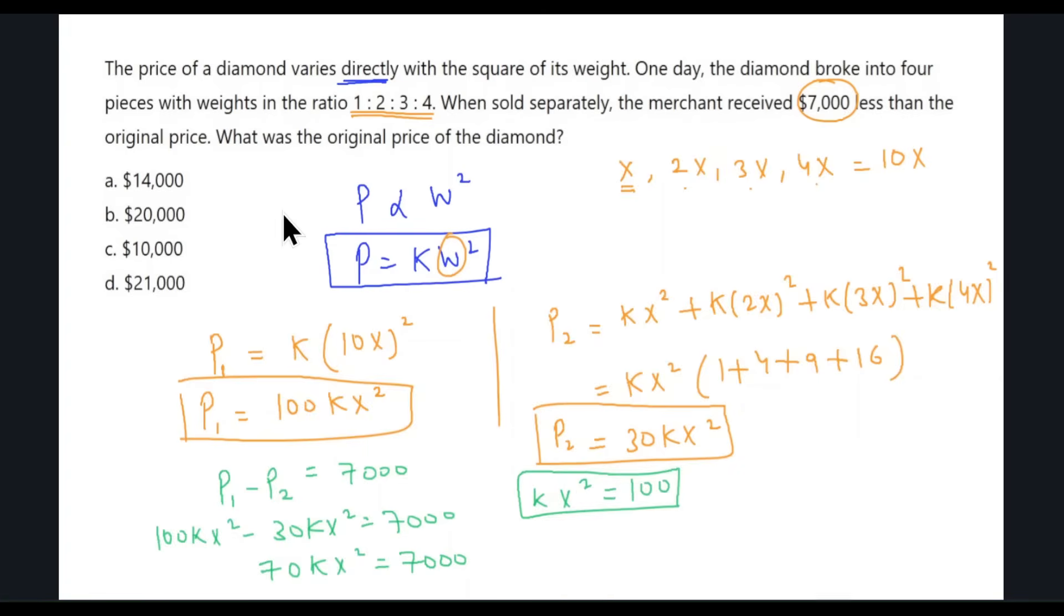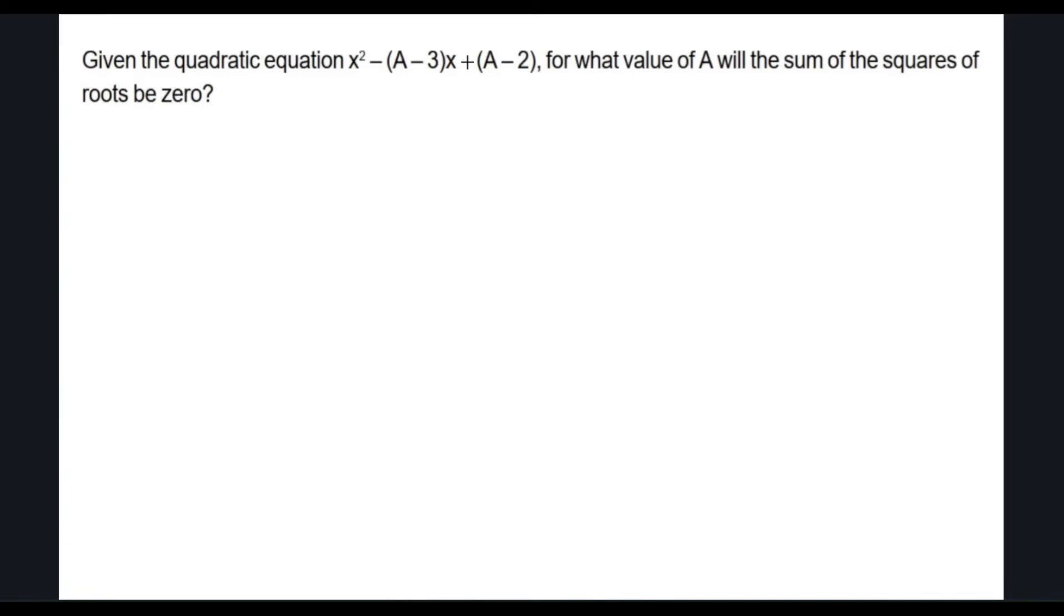They need the original price, so all we need to do is plug in KX squared equal to 100. If we plug that in, P1 will be equal to 100 times 100, so that's 10,000. That's the original price, which looks like option C. This is a pretty good question.